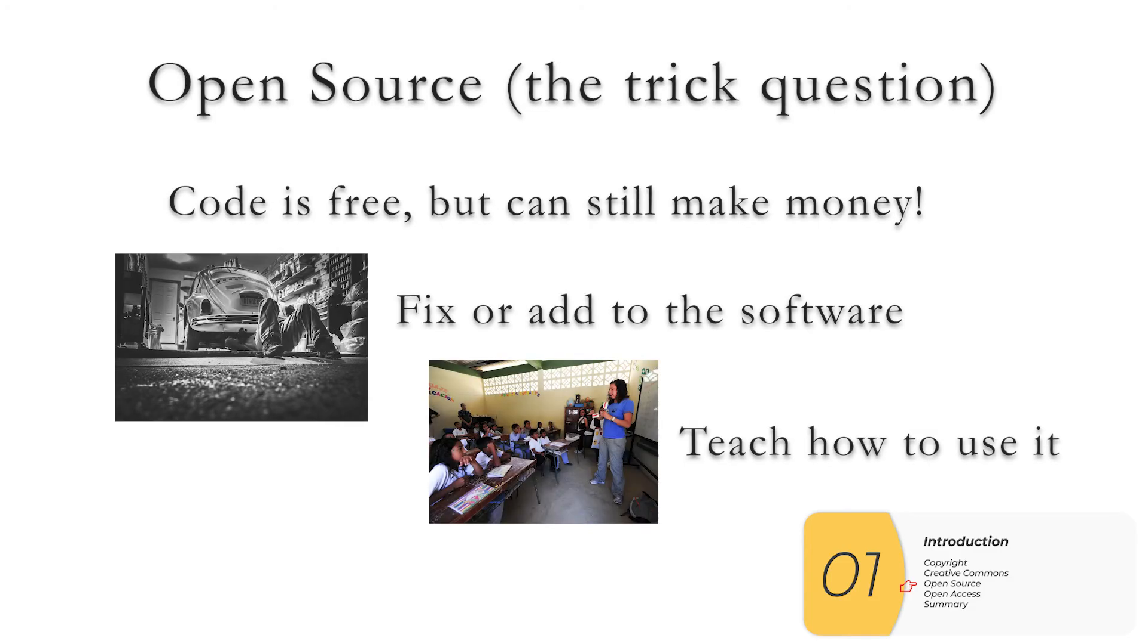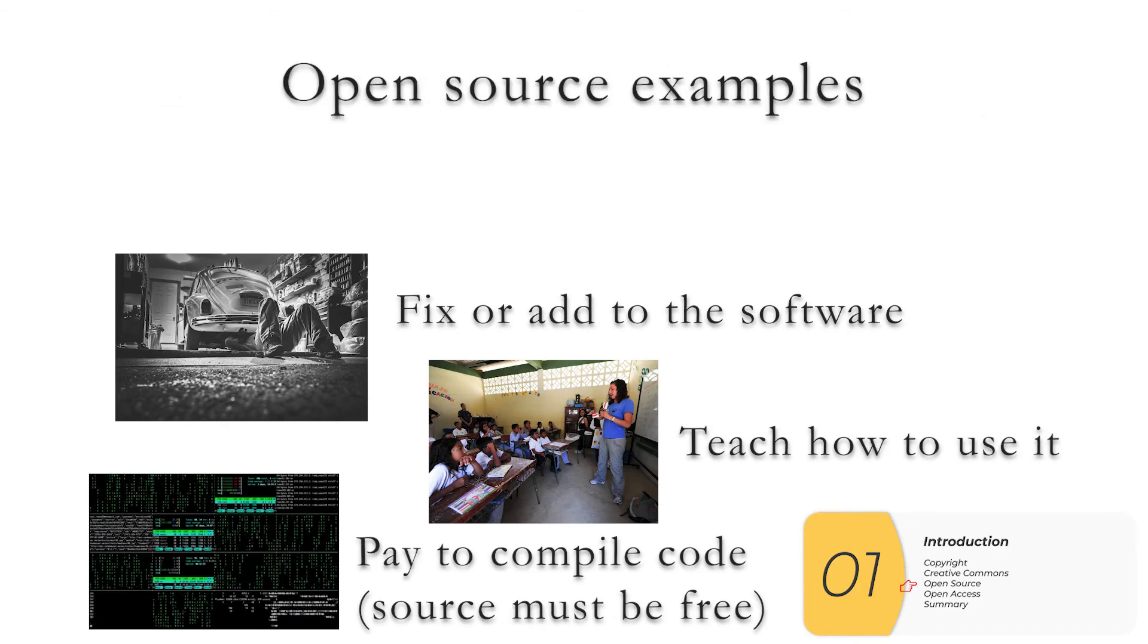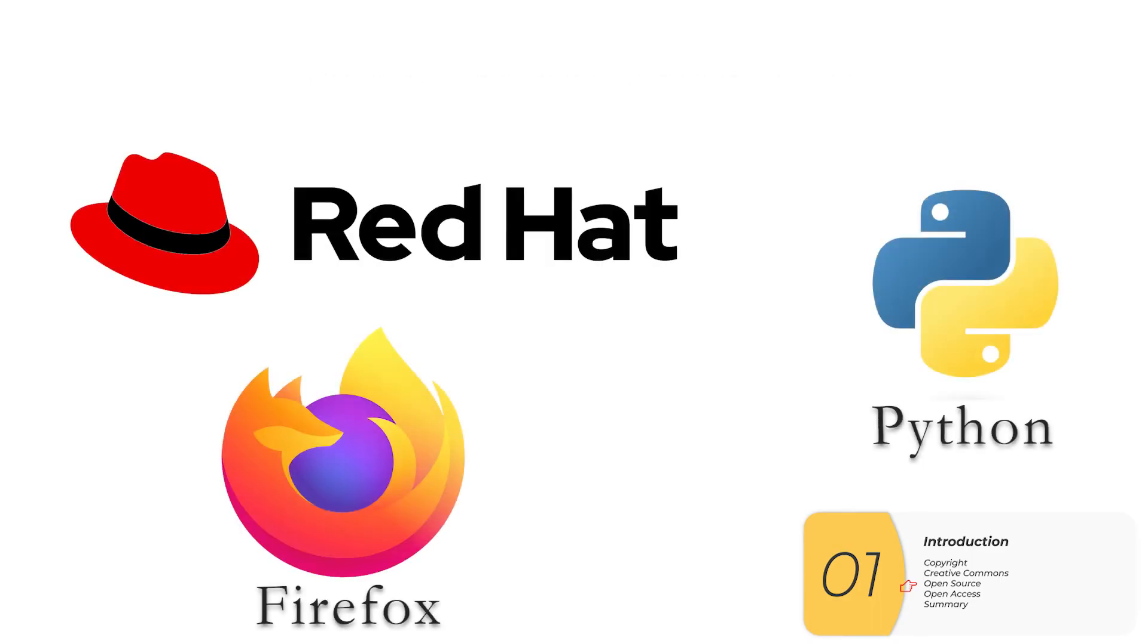Well, they can fix or add to the software. They can teach people how to use it, or the companies can get paid to compile the software or get it to run on your machine. The code is free, but getting it to run on your machine is not necessarily free. And here are some well-known companies that make their money in this way. You might be surprised to see Python here, but the creator of Python makes vault loads of money working on Python for companies like Microsoft and Google.